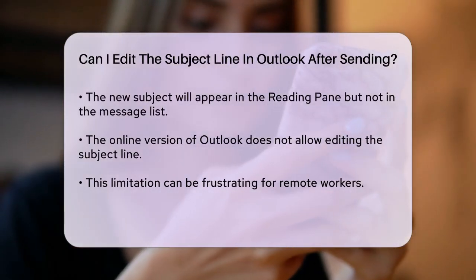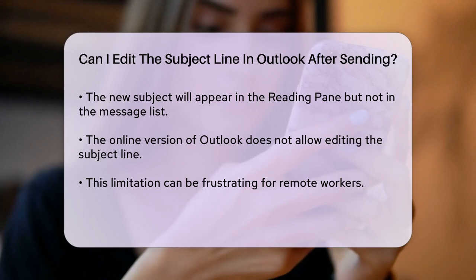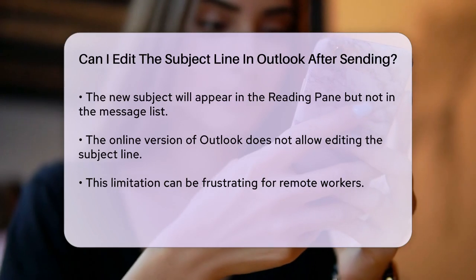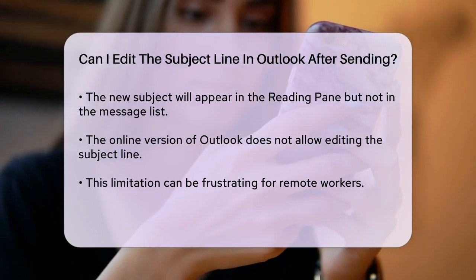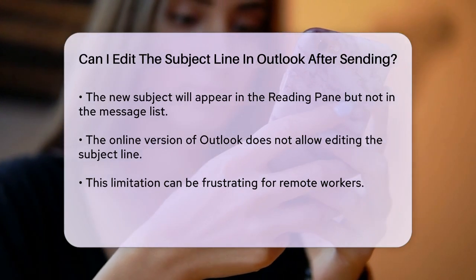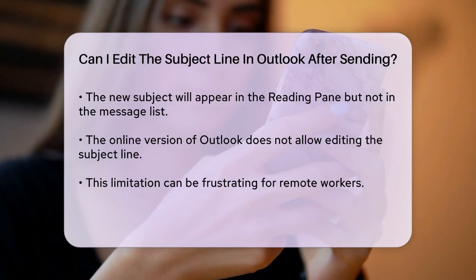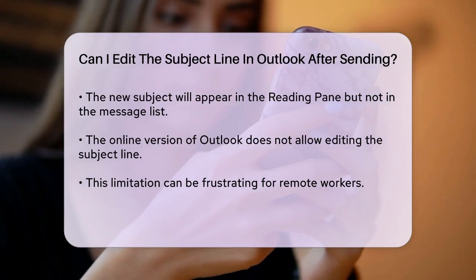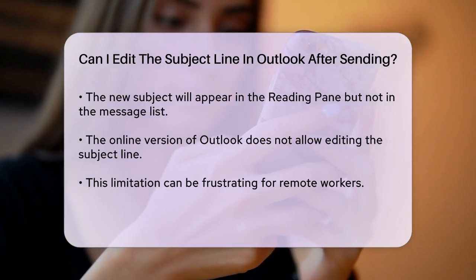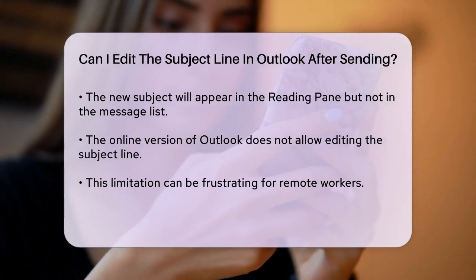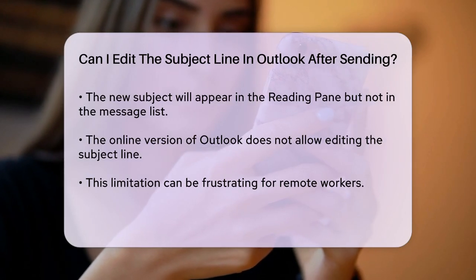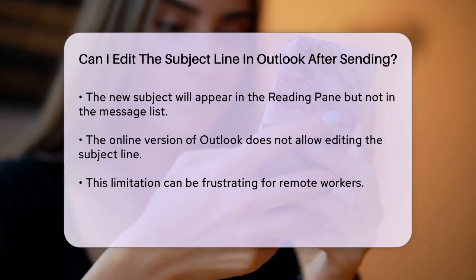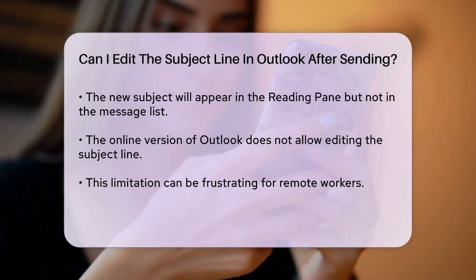Now, if you're using the online version of Outlook, things get a bit more complicated. Unfortunately, you cannot edit the subject line of emails in the online version. This functionality is currently not available, which can be frustrating, especially when working remotely.